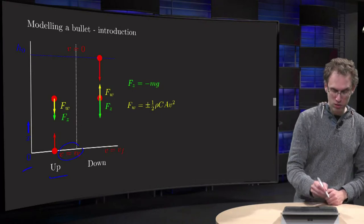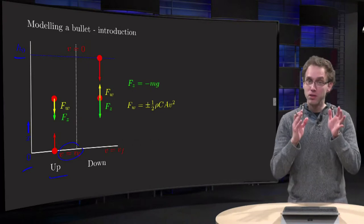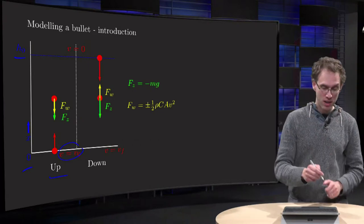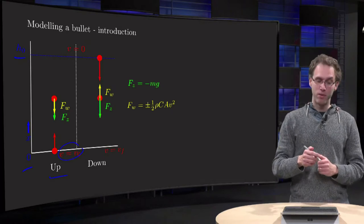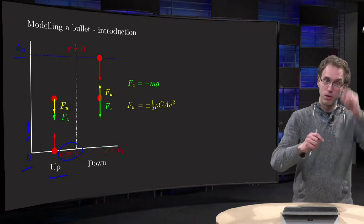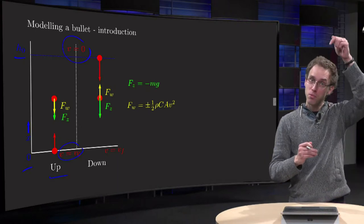We will start at x equals zero, and go to a height h zero. We don't know what h zero is yet, so x will be positive between zero and h zero. And then when we are at h zero, the top, our speed V will be zero, and then we will start moving downward.